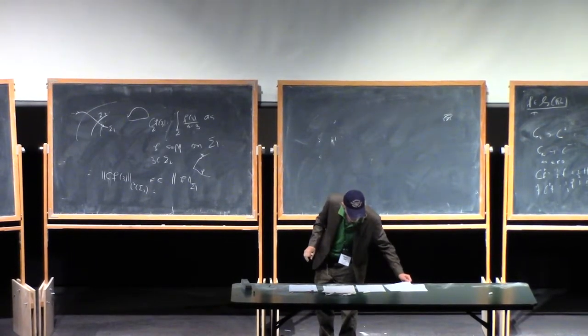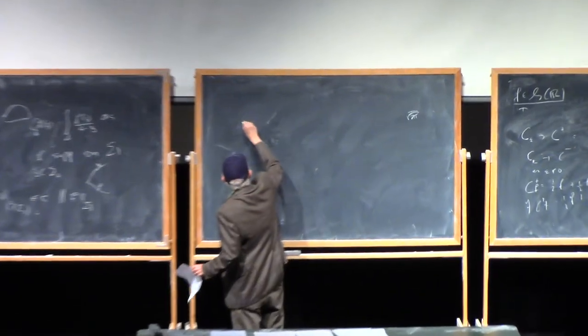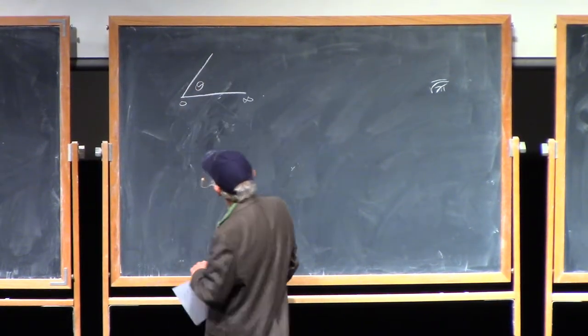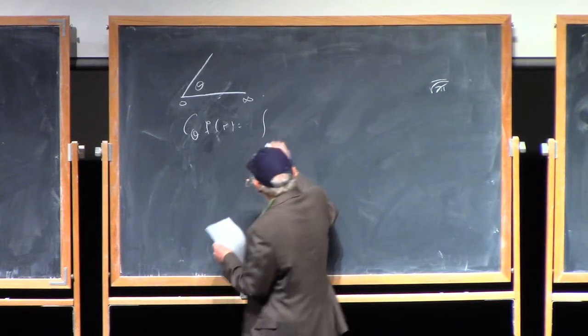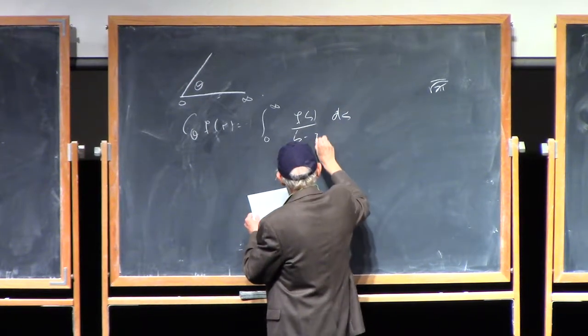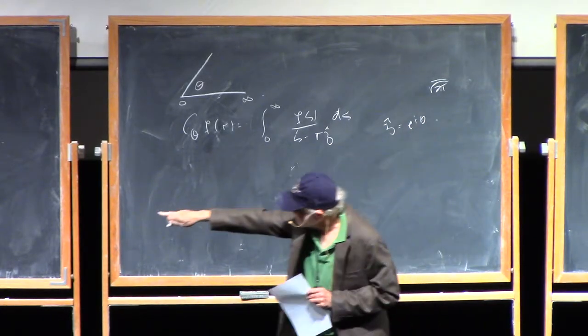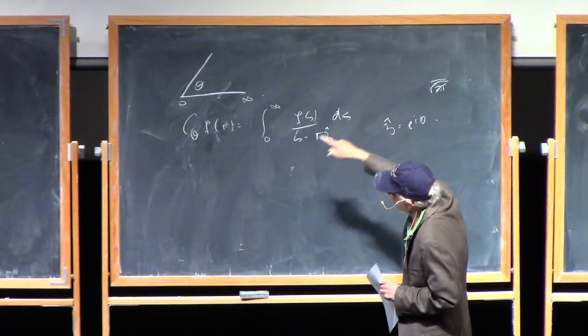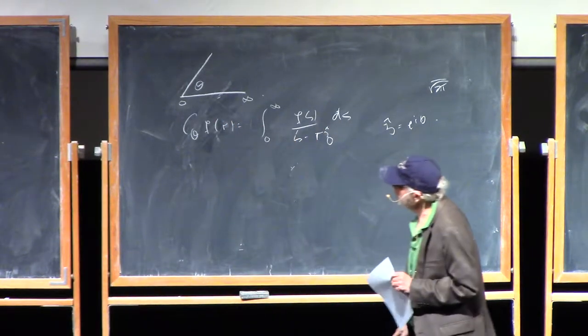Just to give you a flavour of it, take the line 0 to infinity, and take a line here going off at an angle theta, and we have c_theta f at r is integral 0 to infinity f of s ds upon s minus r z hat, where z hat is e to the i theta. So I'm just computing this object, where sigma 1 is the real line, the positive real line, and sigma 2 is the real half line going off at an angle theta.